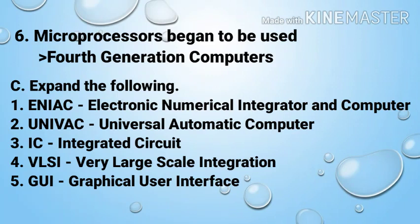Now C: Expand the following. Number one: ENIAC — Electronic Numerical Integrator and Computer. Number two: UNIVAC — Universal Automatic Computer. Number three: IC — Integrated Circuit. Number four: VLSI — Very Large Scale Integration. Number five: GUI — Graphical User Interface.